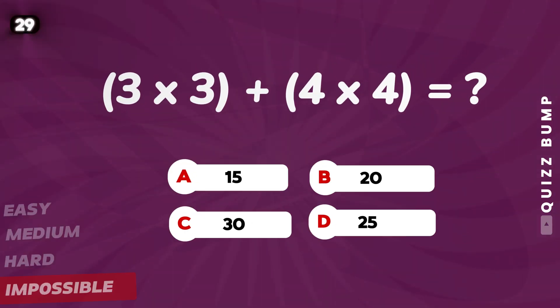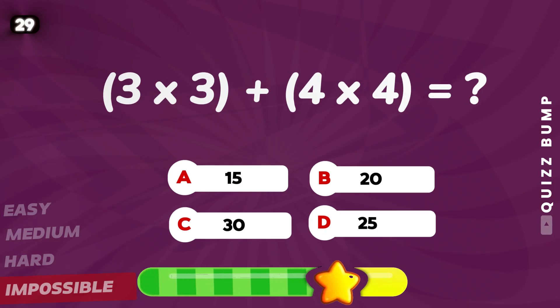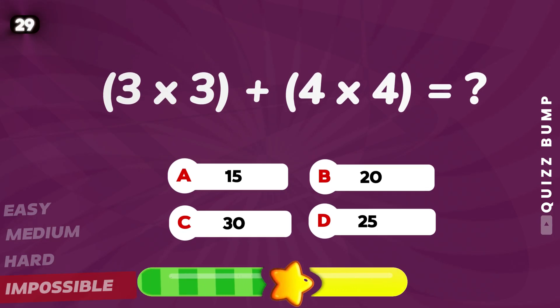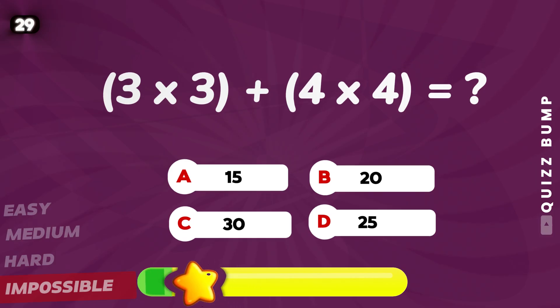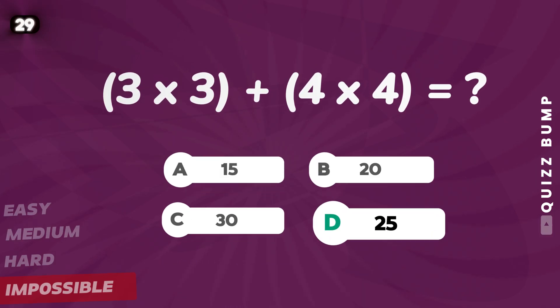3 times 3 plus 4 times 4 is equal to? The answer is 25! That was awesome! Now let's take on this final battle!